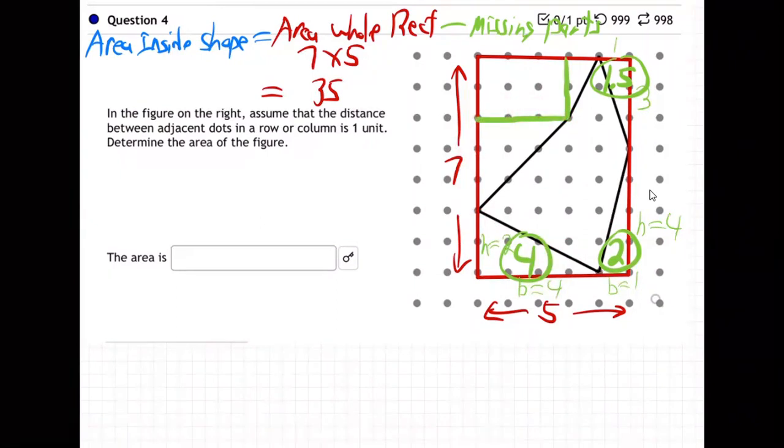So it's three by three. Three times three is nine. Half of nine, four point five. Because it's a triangle.